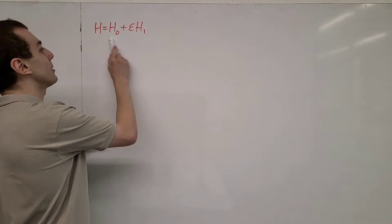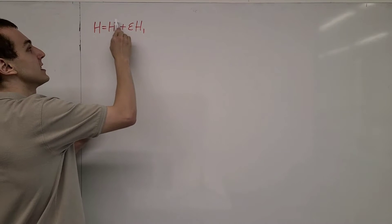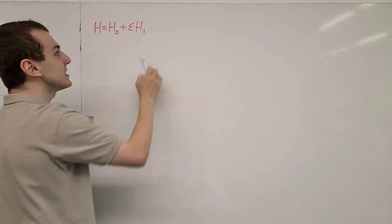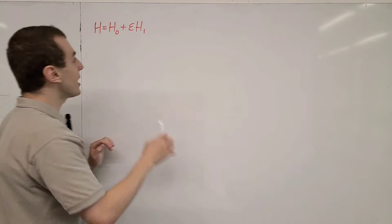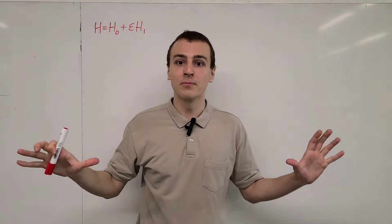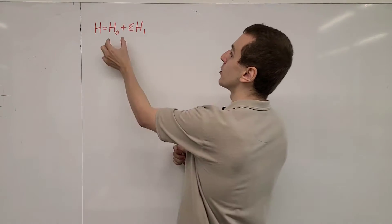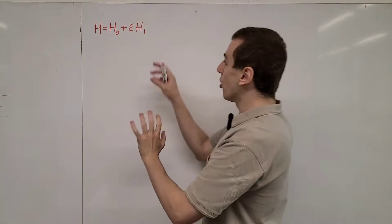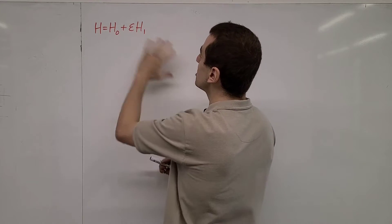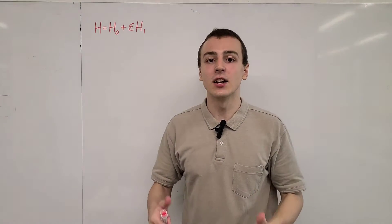H0 is going to be treated as a diagonal matrix — in the eigenbasis of H0, this is diagonal. And H1 is an off-diagonal bit, a small correction that is off-diagonal. If this is some big multi-qubit system, these are going to be huge matrices. All of the diagonal terms are absorbed into H0, and all of the off-diagonal small corrections into H1. There are a lot of conditions that need to be satisfied for second order perturbation theory to be a valid approximation.